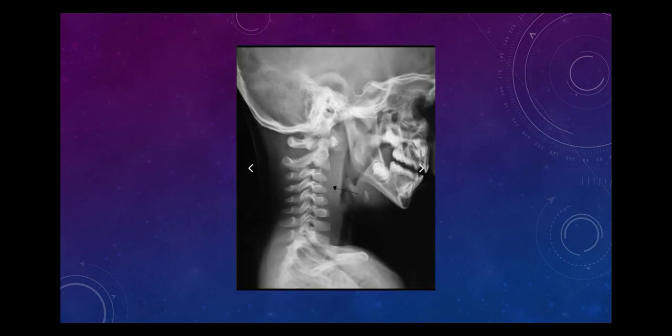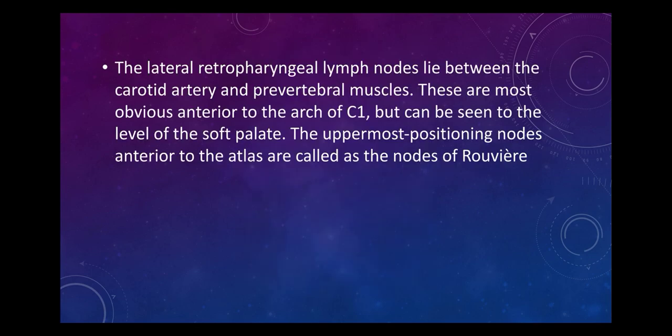If the prevertebral space is more than half the body of the vertebra, it is suggestive of a retropharyngeal abscess. The lateral retropharyngeal lymph nodes lie between the carotid artery and the prevertebral muscles, most obvious anterior to the arch of C1 but visible up to the level of the soft palate. The uppermost nodes positioned anterior to the atlas are called the nodes of Rouvier.